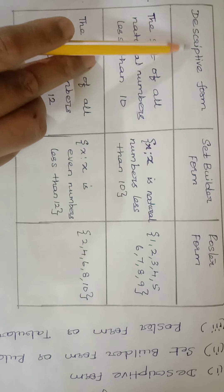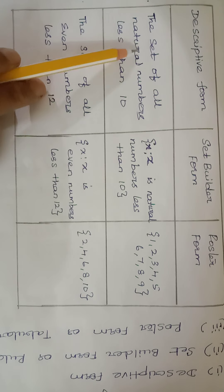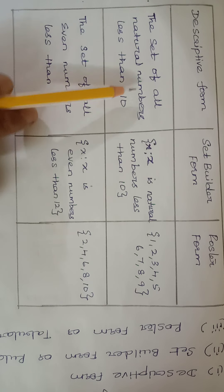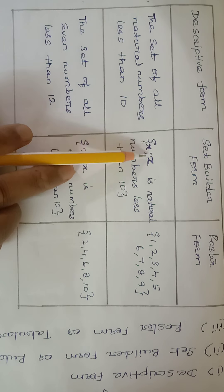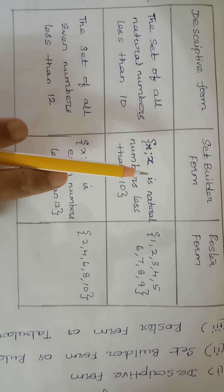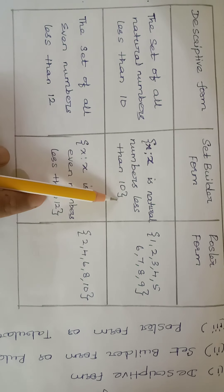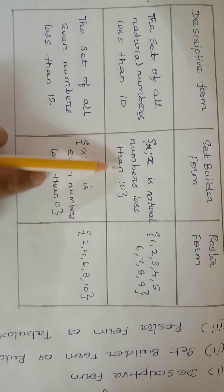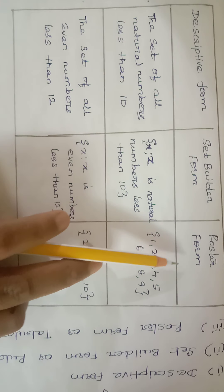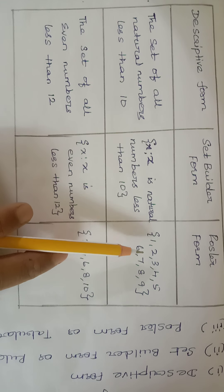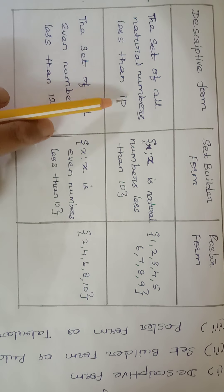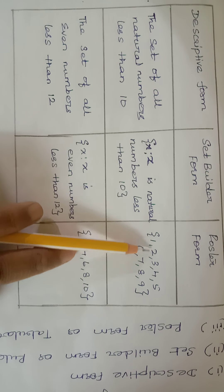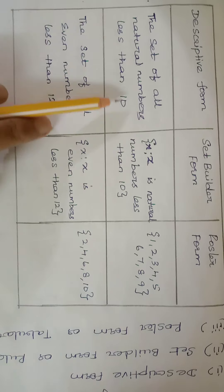Descriptive form: 'The set of all natural numbers less than 10' — it is described clearly, so it is called descriptive form. Set builder form: written inside flower brackets as {x | x is a natural number less than 10}. Roster form: list the numbers inside flower brackets — 1, 2, 3, 4, 5, 6, 7, 8, 9. You should not write 10 because it is less than 10.